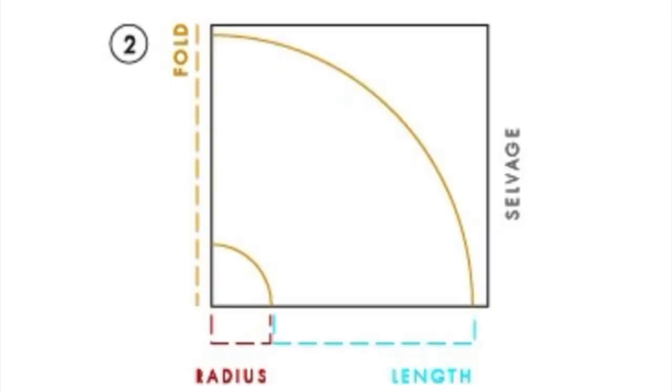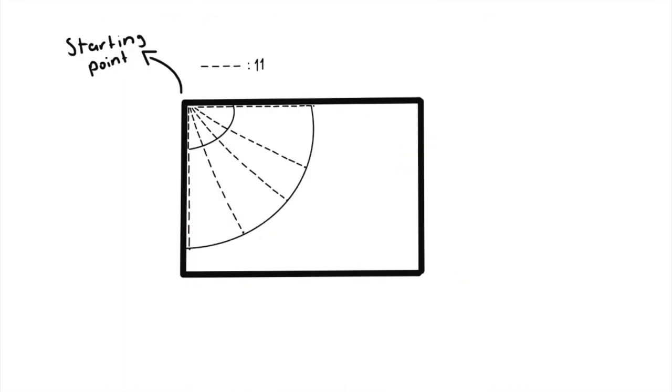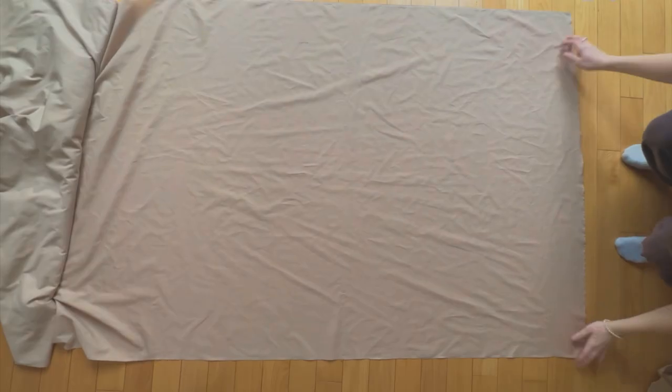This will give you a curve. Once you're done with that first curve, you're going to choose the length of your skirt. I chose a length of 11 since this is just practice. Now you're basically just repeating the same process you just did, but instead of the starting point being the corner, the starting point will be all the dots you just drew for the radius. So once again, mark down all the dots from the folded edge to the double fabric edge.